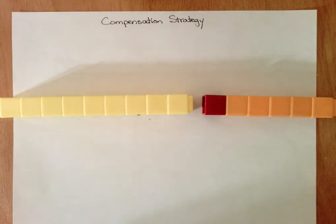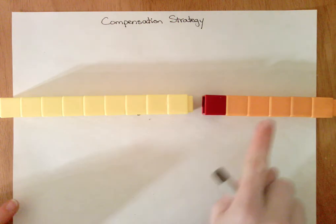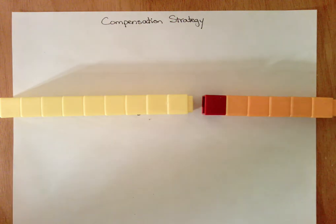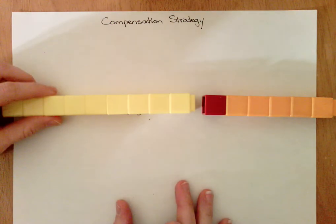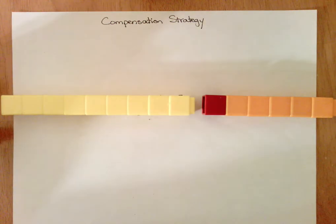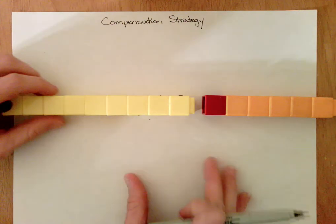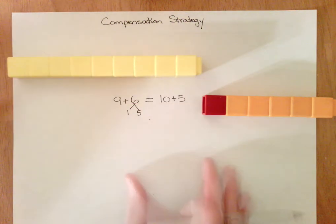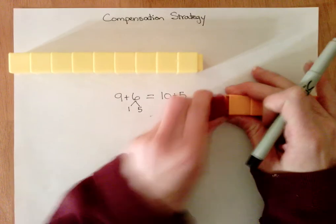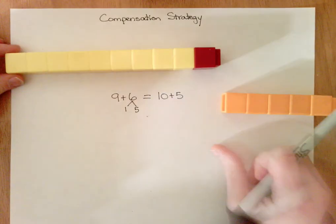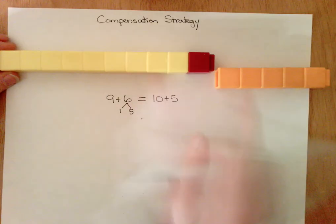Let's give you an example. We have 9 + 6. Students in first grade have learned that they can make an easier problem by adding one to the nine from the six and adding 10 + 5.